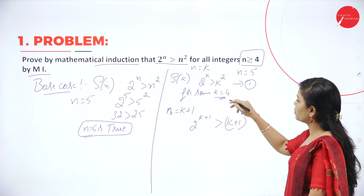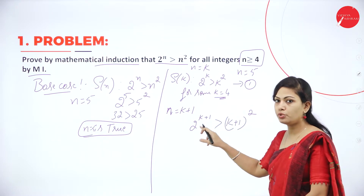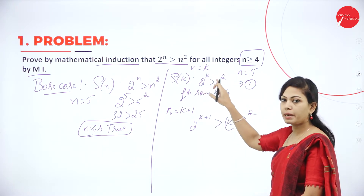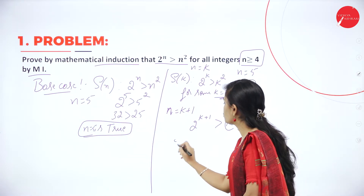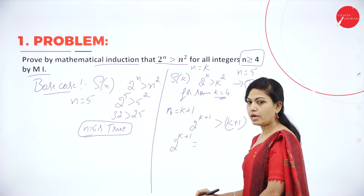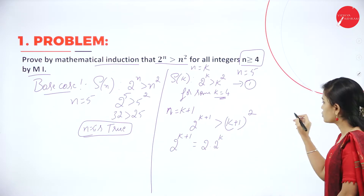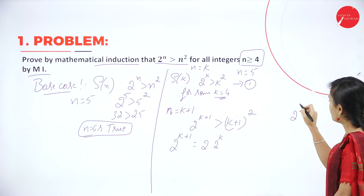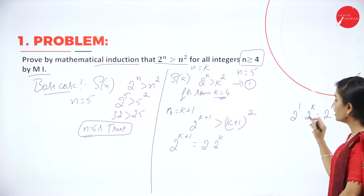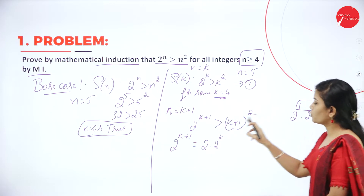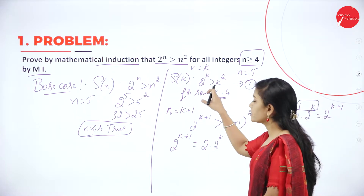So here this is equation number 1 — we have replaced n by k, giving 2 power k is greater than k square. And we have to prove that n equal to k plus 1 means 2 power k plus 1 in place of n. I will take the LHS: 2 power k plus 1 equals 2 into 2 power k, because 2 power 1 into 2 power k with the same base gives 2 power k plus 1 when adding the exponents.